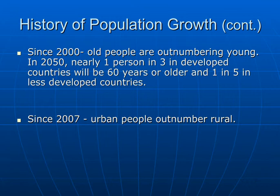And since 2007, we have seen that urban people outnumber rural. Within the next 30 years, nearly two-thirds of the world's population will live in urban areas. China's rural population moving to urban areas is actually the largest migration movement in the world's history. Almost half of all Chinese live in urban areas today, and there are a staggering 90 cities in China with a population of more than 1 million people.